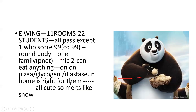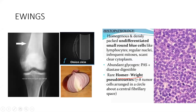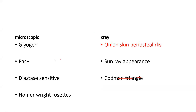Homer-Wright rosettes are there. They melt like snow. Glycogen PAS-positive, diastase-sensitive — these are the histological markers. Now moving to X-ray findings and differential diagnosis.